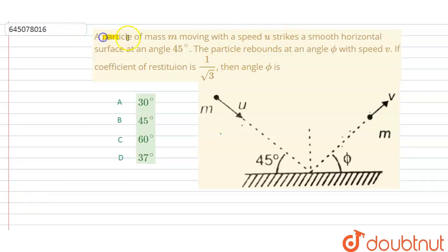A particle of small mass m moving with the speed u strikes a smooth horizontal surface at an angle 45 degrees. The particle rebounds at an angle phi with the speed v. If coefficient of restitution is given 1 by root 3, then you have to find the angle phi.